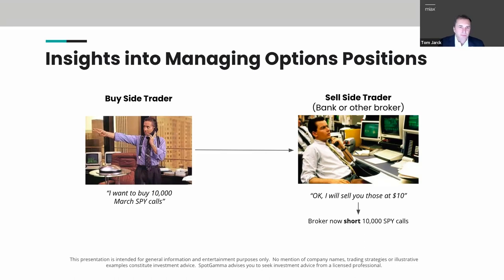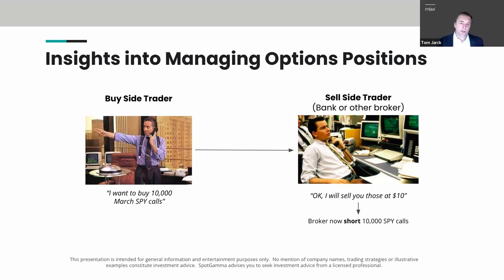Whether it's a clearing firm charging you or internal risk management, you have to know how to cover the risk — it may not be that exact option but you may need to cover your downside stress scenario. We always looked at: if the market went down 10%, how much would I lose right now? You factor in different correlations and betas across products, and that's kind of how you manage it.